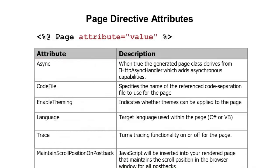Here's a brief list of some of the different page directive attributes. You can perform asynchronous operations using ASP.NET and specify whether the page is async or not. The code file attribute lets you identify the code separation .cs or .vb file. Enable theming lets you turn theming on or off, and you can list a specific theme as well. Language is pretty simple — specify C# or .vb.